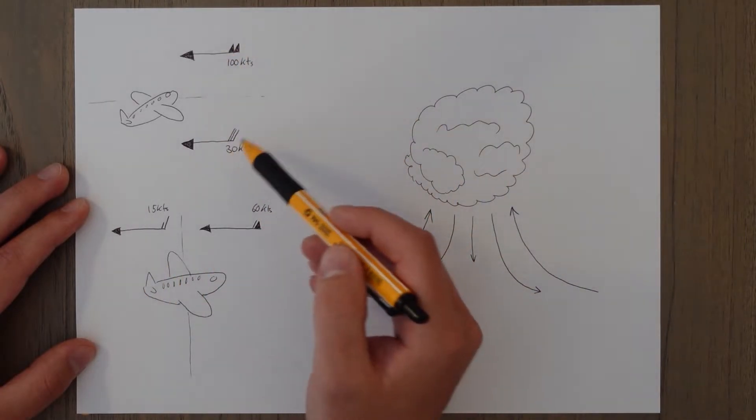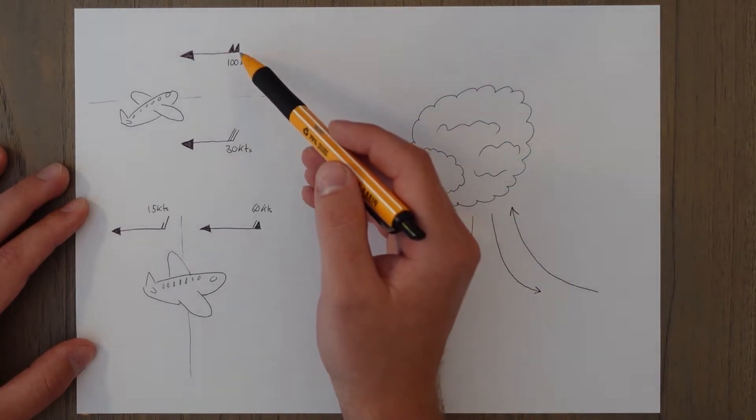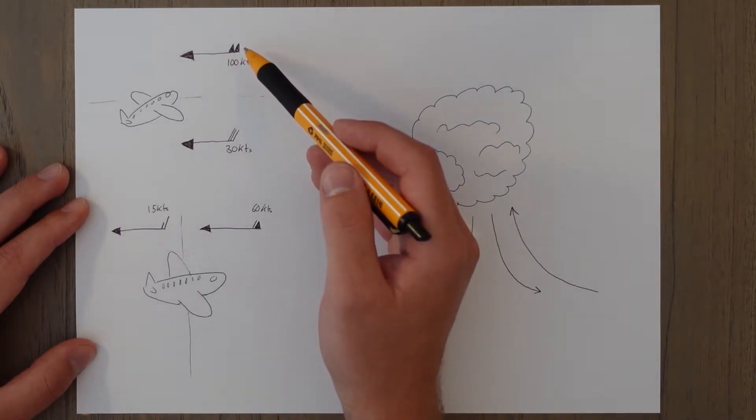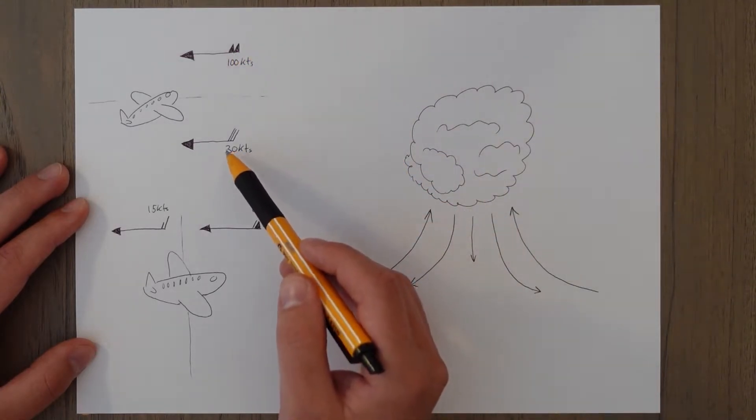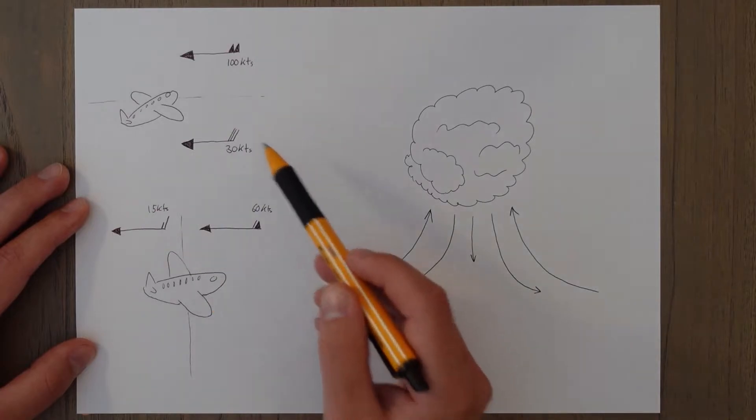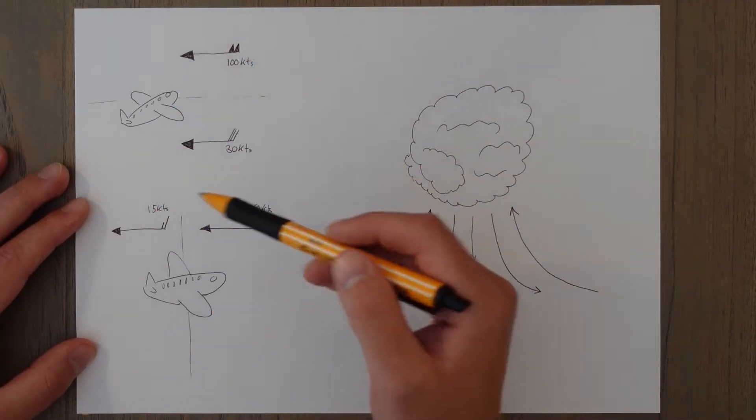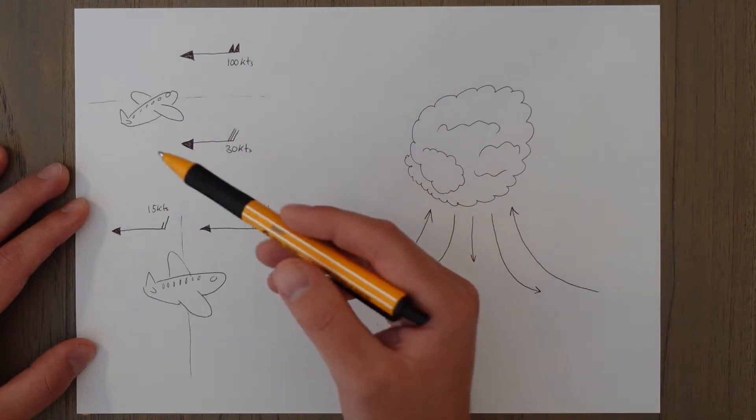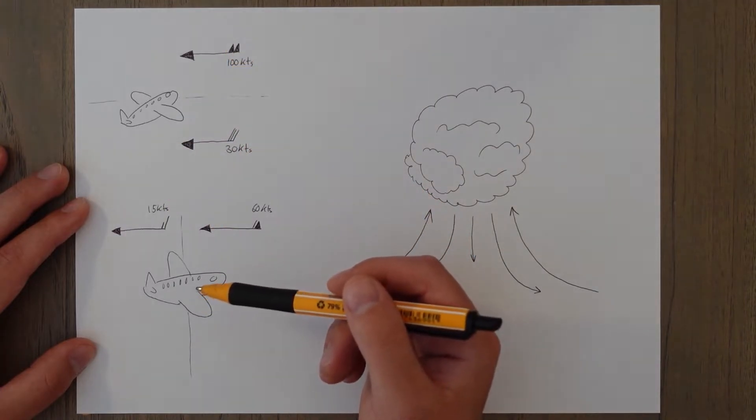These wind vectors—the triangles stand for 50, so that's 100 knots, and the full lines stand for 10 and the short lines stand for 5. So you get 50 knots, 60 knots, 30 knots, 100 knots. That's a very common way of displaying wind vectors that we'll see a bit more in the future.